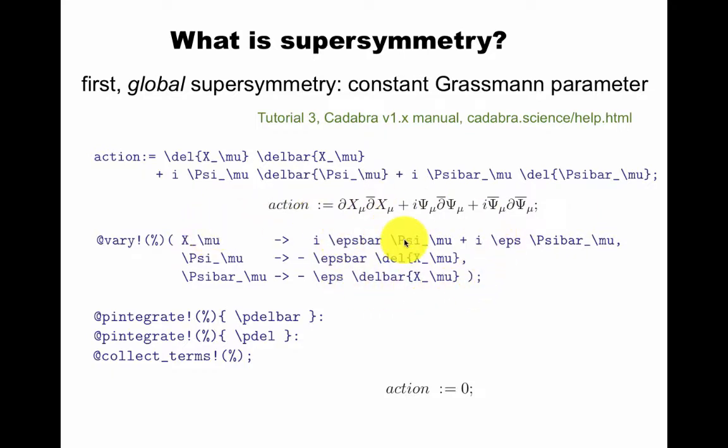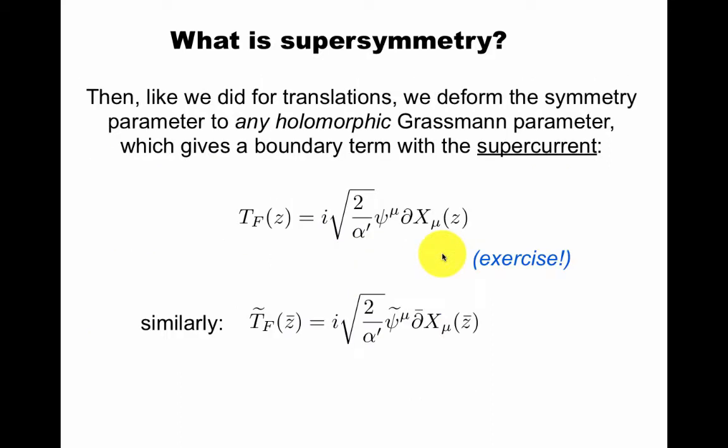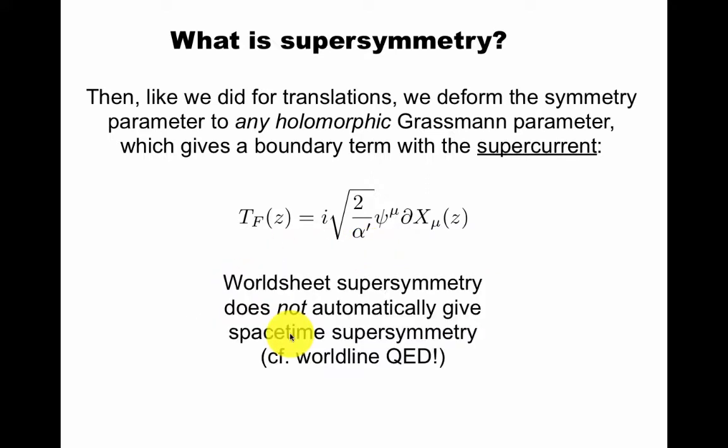and you see that there's a symmetry that looks like this. The symmetry is x varies into psi, and psi varies into del x. Like with different translations, we now go from the global symmetry to any holomorphic Grassmann parameter. This gives a boundary term, and it's a very useful exercise to compute this. The boundary term is the supercurrent. So by the Noether procedure, we get a holomorphic current, whose contour integrals give us the charges associated with the symmetry. Similarly, this one for the anti-holomorphic fermion. But it's important to keep this distinction.